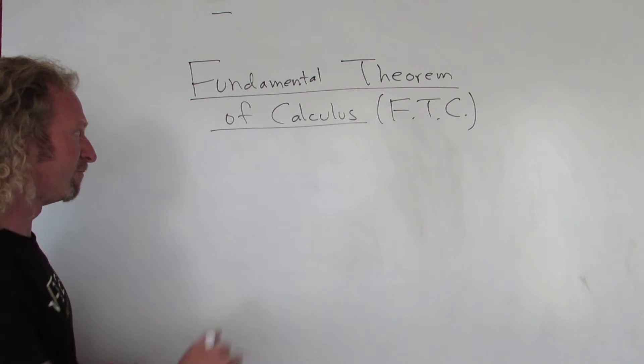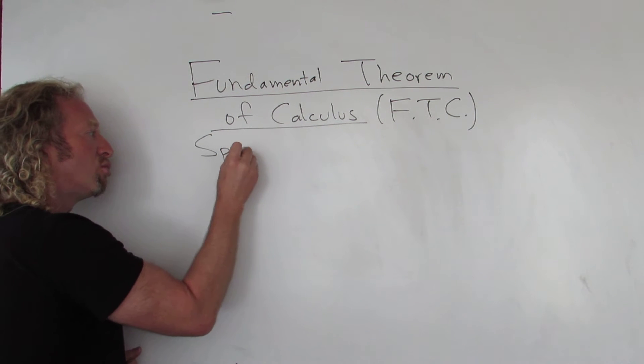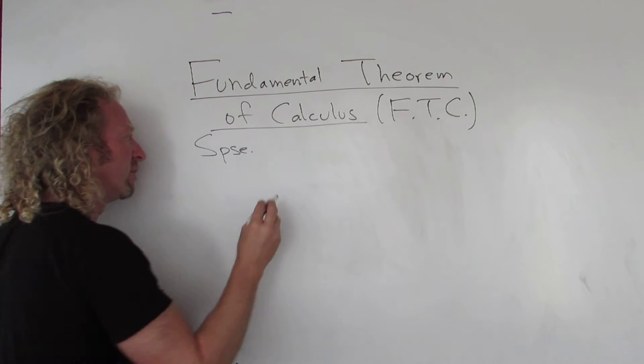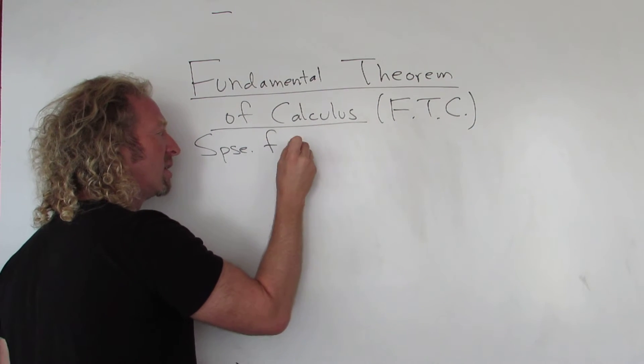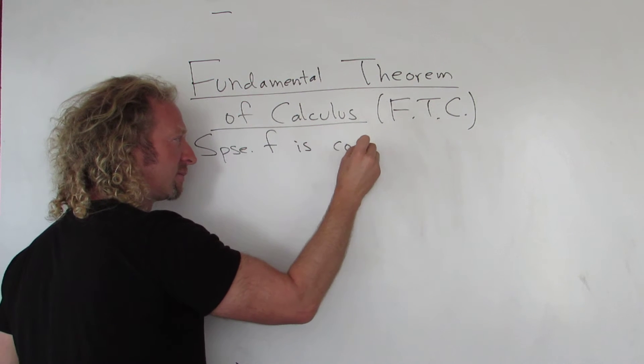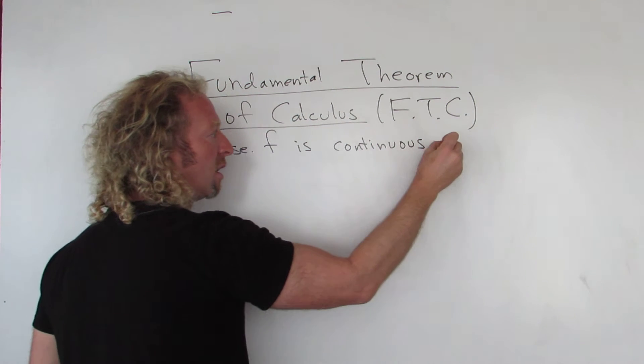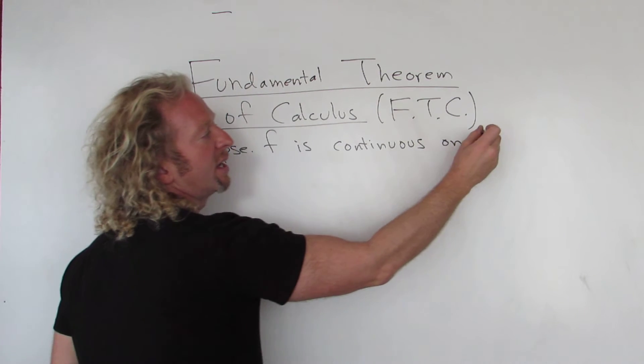So let's take the theorem. It says suppose you have a function that's continuous on a closed interval. So suppose F is continuous on a closed interval, let's say AB.